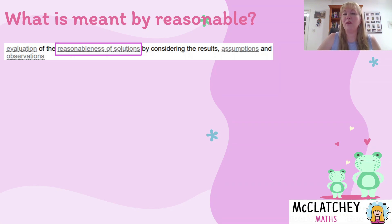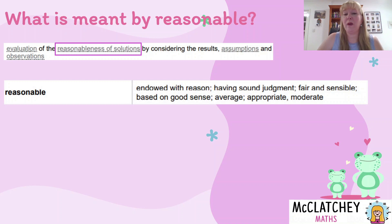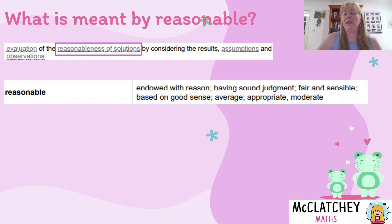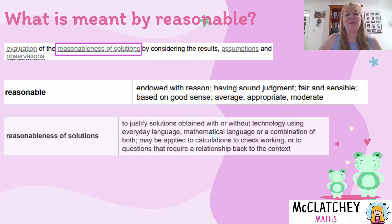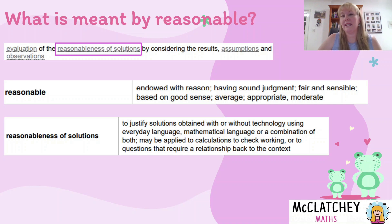Let's talk about what 'reasonable' means. The QCAA definition is that it is endowed with reason, having sound judgment — deciding whether something is good, fair, sensible, appropriate, moderate. We're looking at whether our solution makes sense in a real life context: is it what we expect, would it work if we had to implement it? Our solutions need to be justified and applied back to the context in some way.